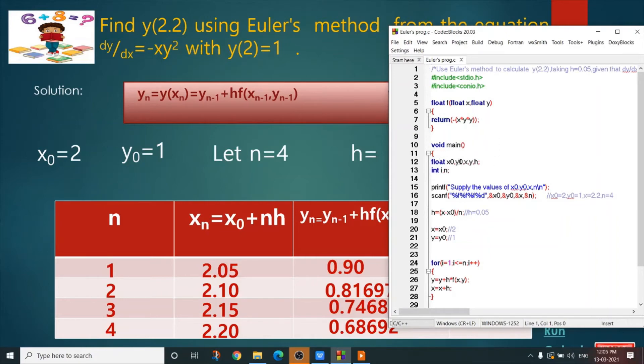This is Voigtman. There are some float variables. Now take the values of x0, y0, x and n.